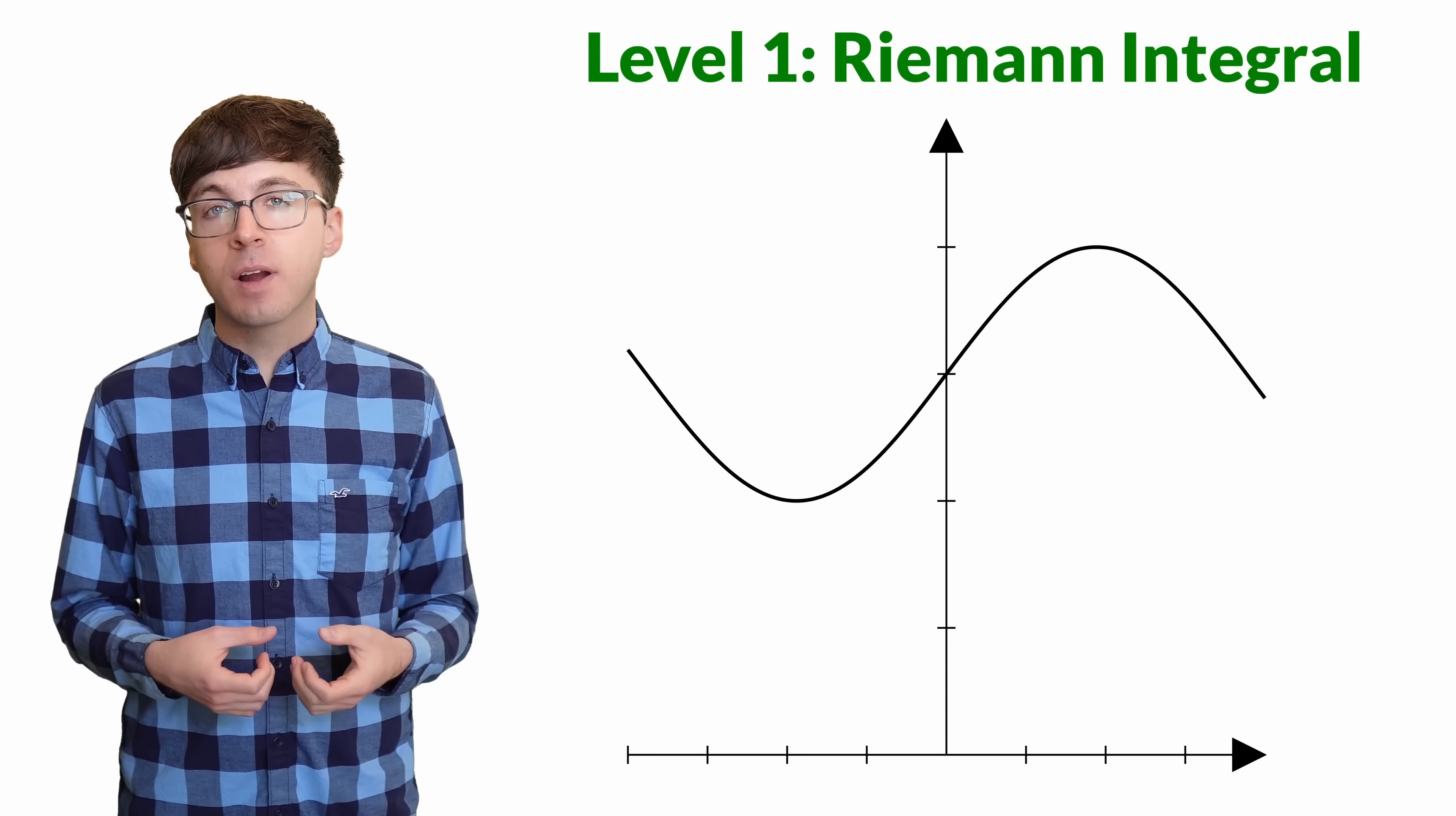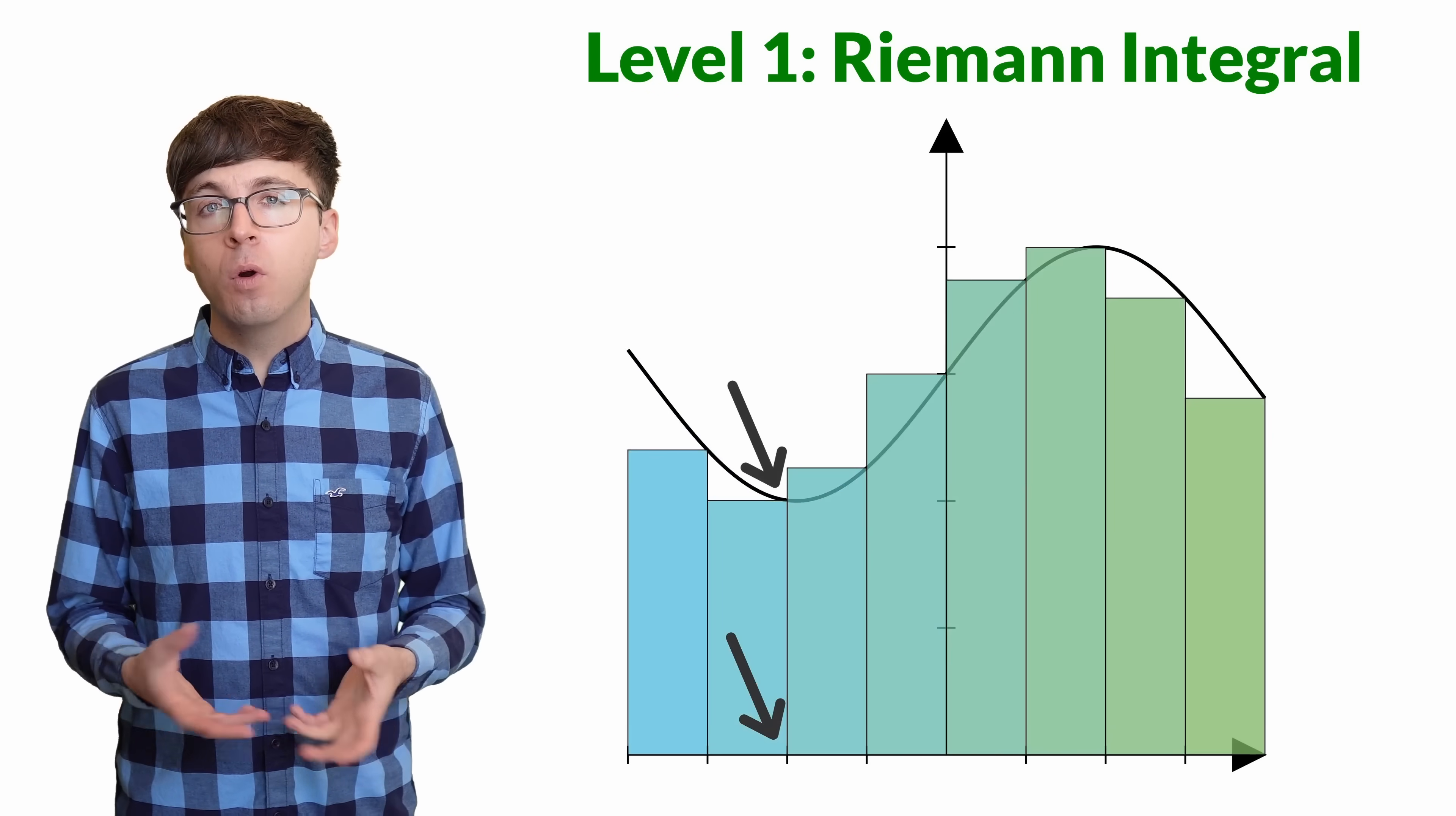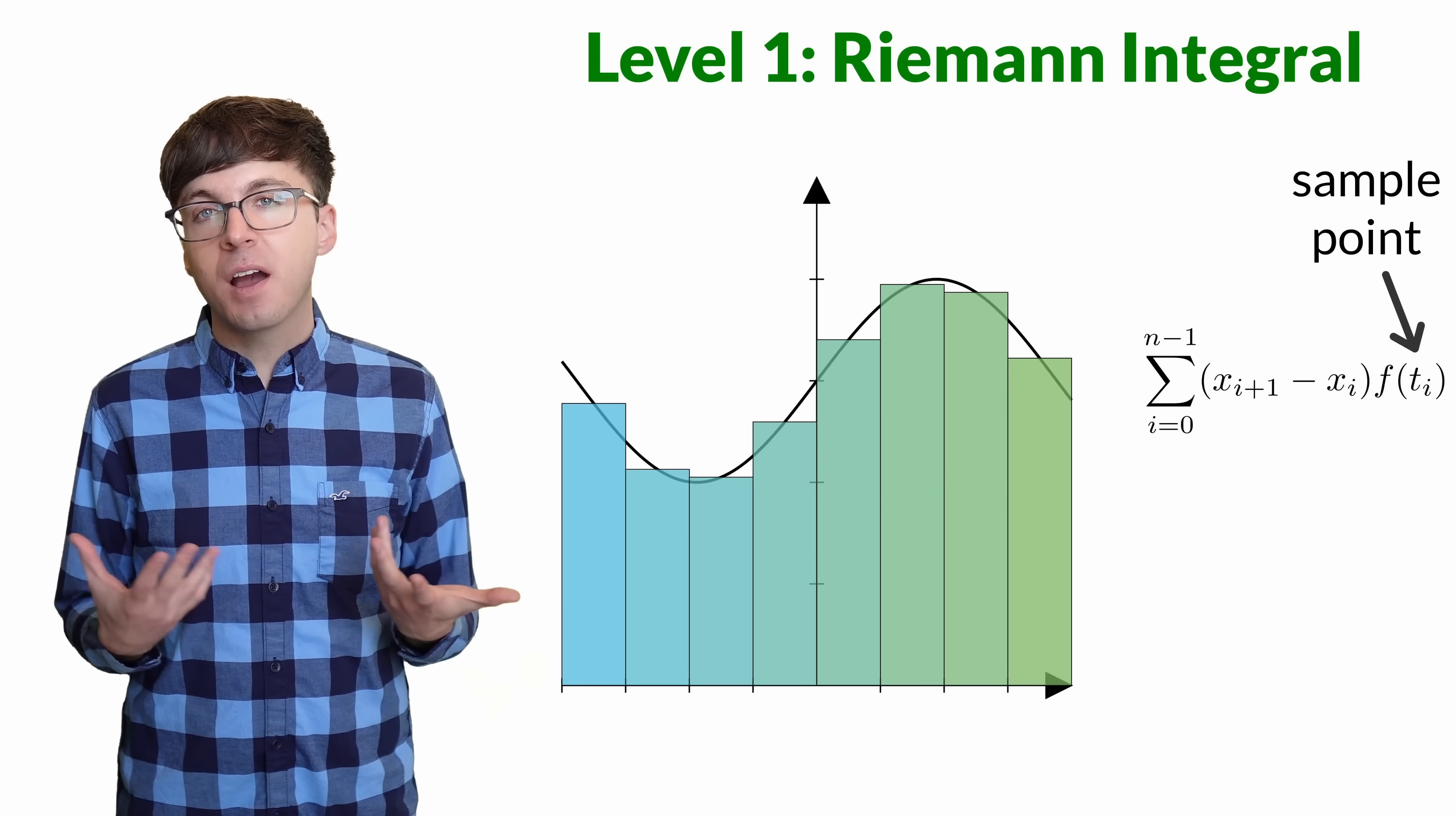Then we want the height of the rectangle to approximate the function. But what values should we pick? We could plug in the left endpoint to the function, or maybe the right endpoint. Or we could use the midpoint or any other value in between. The point we pick is called the sample point.